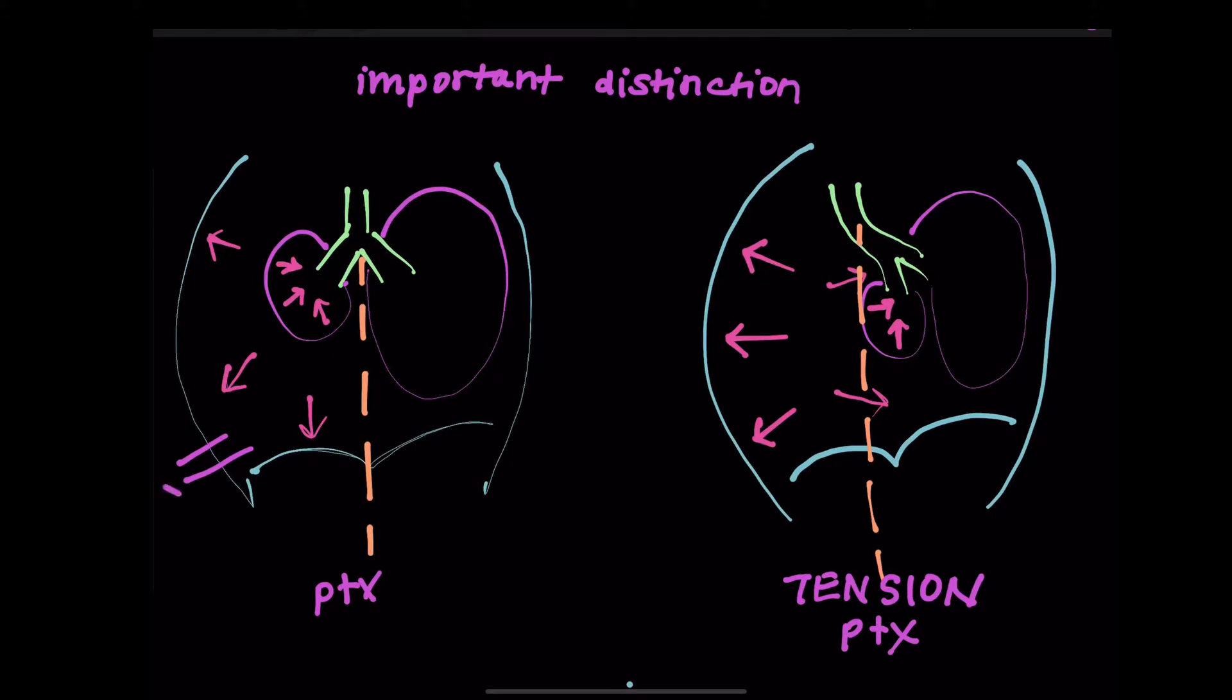So in your regular pneumothorax, what you've got going on is essentially a two-way valve. So any air that goes in is also going to come out. So everybody's just hanging out at atmospheric pressure. Lung's happy, diaphragm's happy. It's essentially okay.